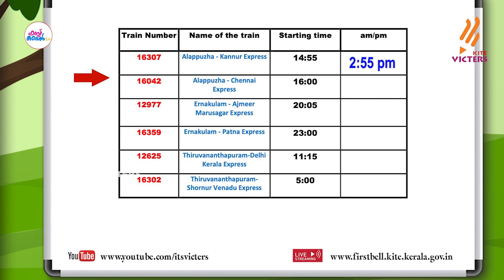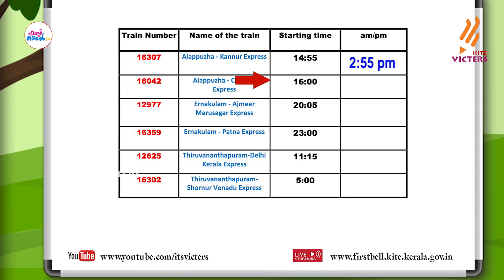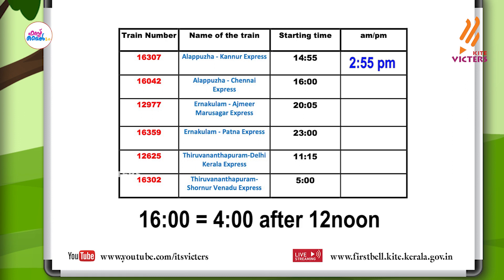Look at the second one. Train number 16042, Alapulla Chennai Express, starts from Alapulla Station. What is the starting time? It is sixteen hours. What do you mean by sixteen hours? It is four hours after twelve noon. So we can write it as four PM.